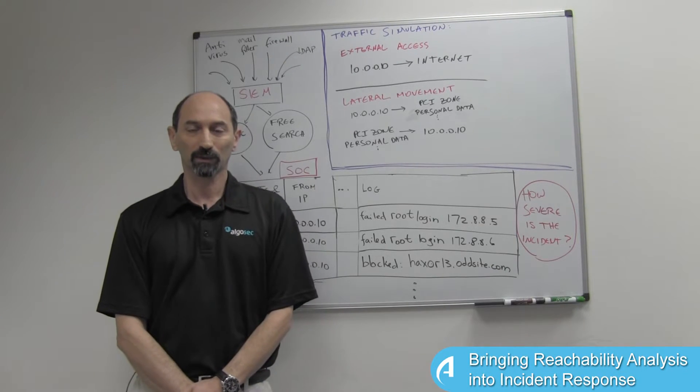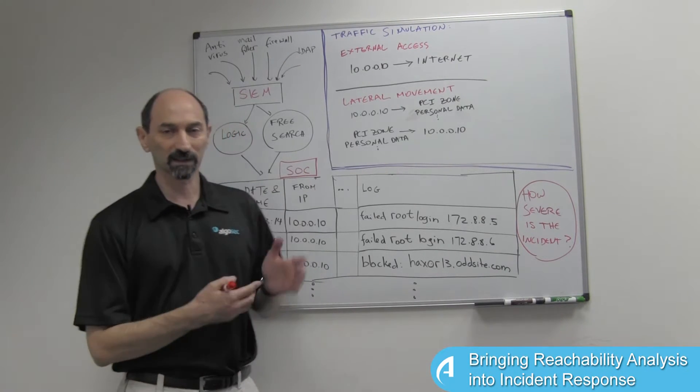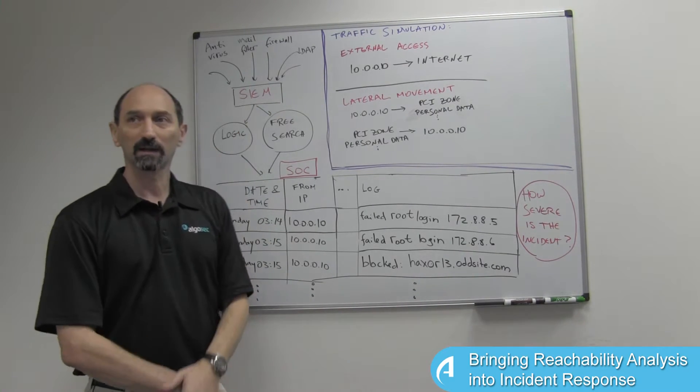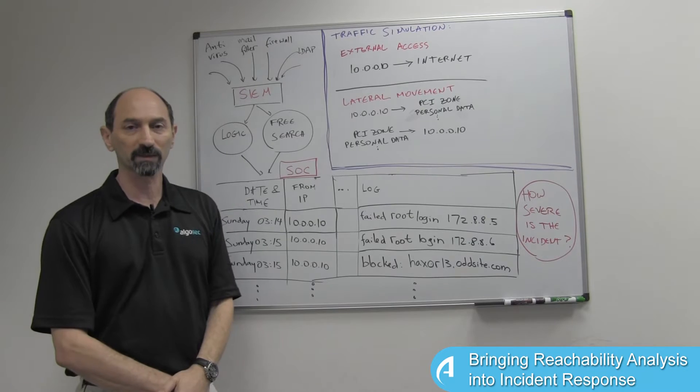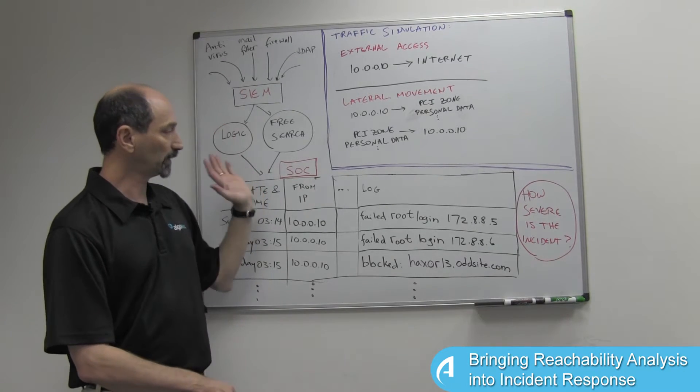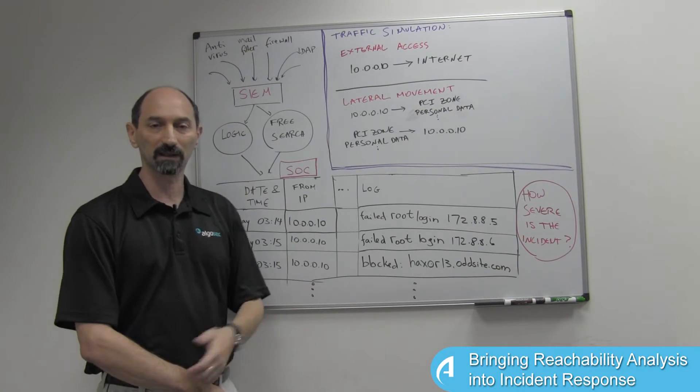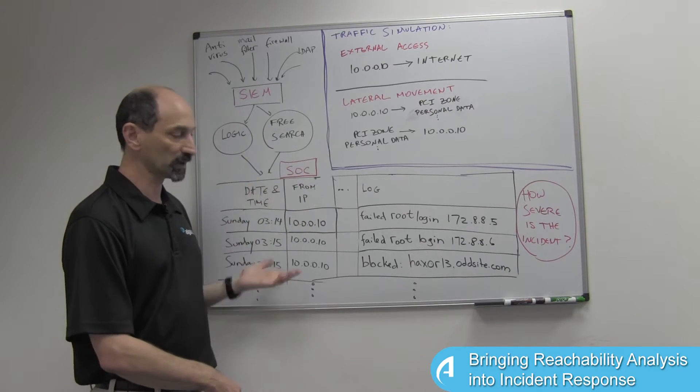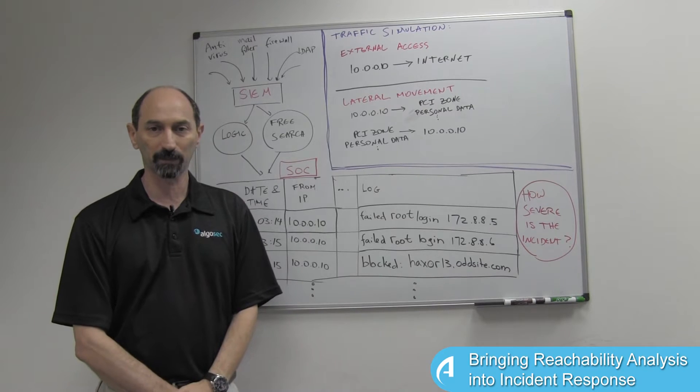In a previous lesson, we talked about the general incident response process, how information flows into the security information and event management system, the SIEM, and how the people in the SOC review the incidents and take action, and how bringing business context into this process makes decision making much better.